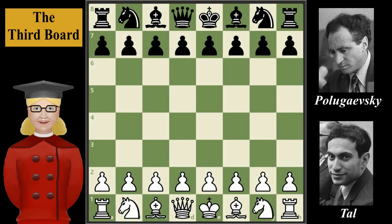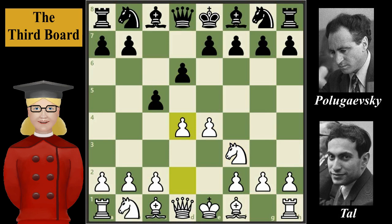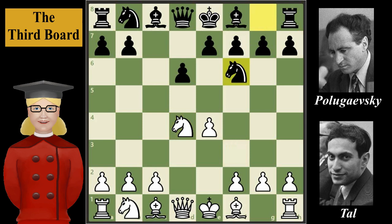Mikhail Tal has white and starts with pawn to e4. Lev Polugayevsky plays c5, the Sicilian Defense characteristic move. And after knight to f3, d6, d4, c takes on d4, knight takes on d4, knight to f6, knight to c3, a6 — we have on the board the Sicilian Defense Naïdorf variation.